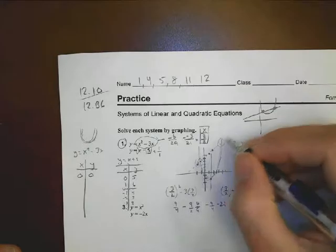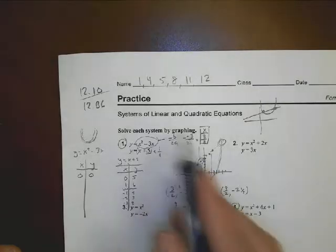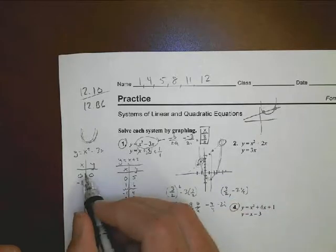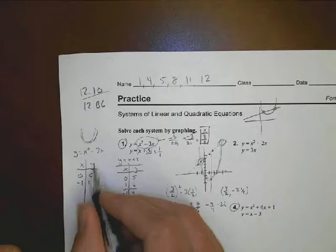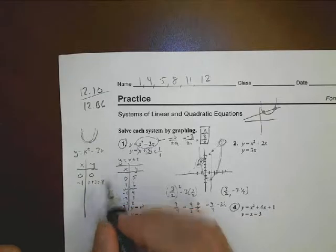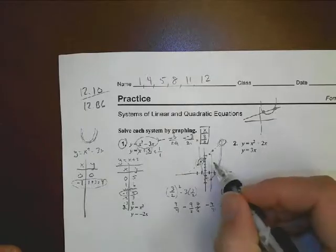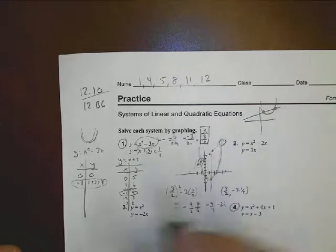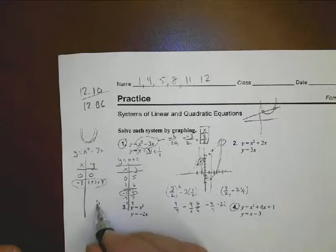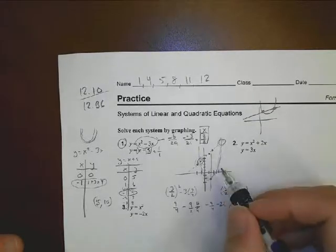Depending on how your teacher presented this, they might want you to just graph it and say about where that's going to be. If I plug negative 1 into the quadratic equation: (-1) squared is 1, minus 3 times (-1) is plus 3, so 1 plus 3 is 4. So (-1, 4) is definitely one of our solutions. The second answer they're looking for is going to be at (0.5, 10). So be careful as you graph — make it neat enough to figure out what it might be.